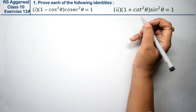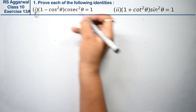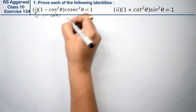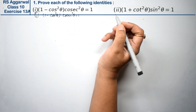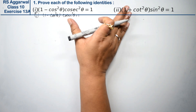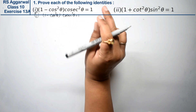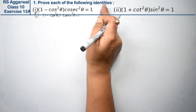Let's do question number one of exercise 13a, that is trigonometric identities. Question number one: prove each of the following identities. The first part is: 1 minus cos squared theta times csc squared theta equals 1. This exercise is related to just three identities which I told in the last chapter, chapter number twelve, in the introductory section.